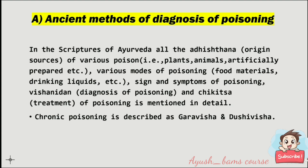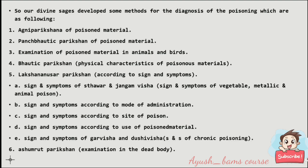In the scriptures of Ayurveda, all the adhisthana of various poisons, modes of poisoning, and signs and symptoms of poisoning — vishanidhan and chikitsa — are mentioned in detail. Chronic poisoning is described as garavisha and dushivisha. Our divine sages developed six methods for diagnosis of poisoning: agni parikshana, panchabhotik parikshan, examination in animals and birds, bhotik parikshan, lakshanusar parikshan, and ashmarud parikshan.